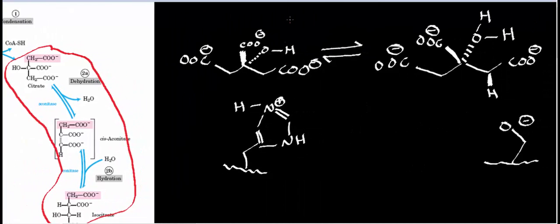So I'll draw the mechanistic steps in blue. The very first step of this mechanism is going to be a proton transfer. So, there exists a protonated histidine in the resting state of aconitase's active site. And so, the enzyme is going to facilitate the proton transfer onto that hydroxyl group.